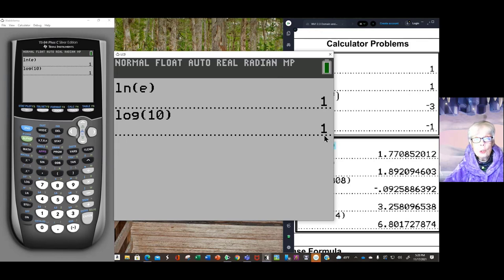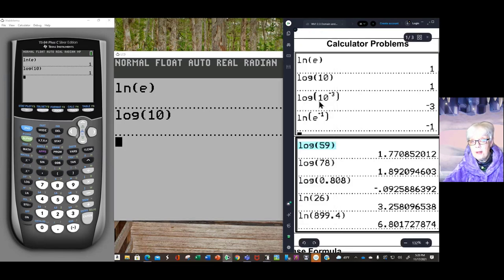You'll also find out why the log of 10 is 1, why the log of 10 to the negative 3 is negative 3, and why the log of the ln of E to the negative 1 is negative 1. You'll find that out tomorrow.